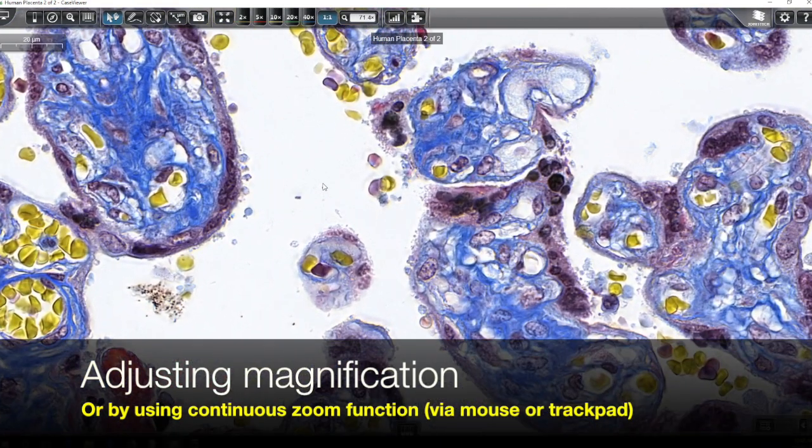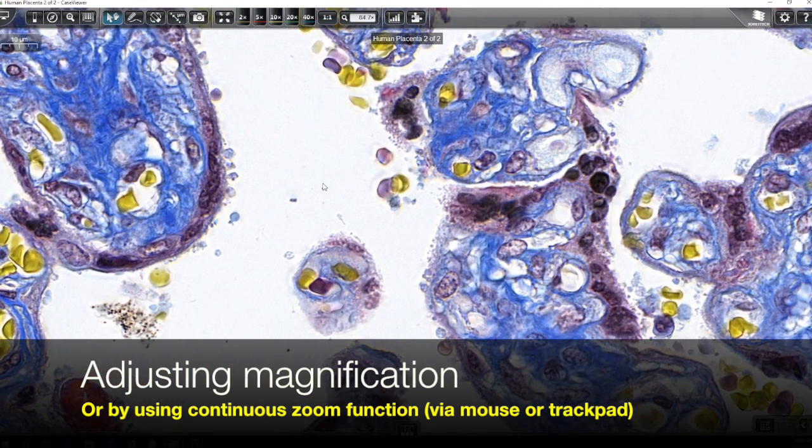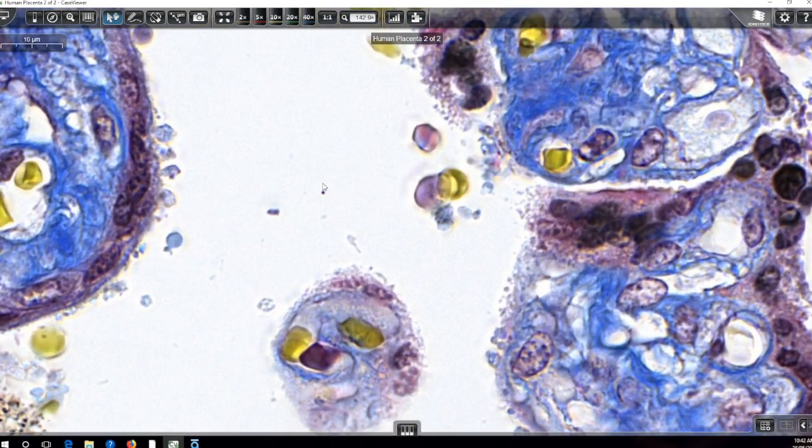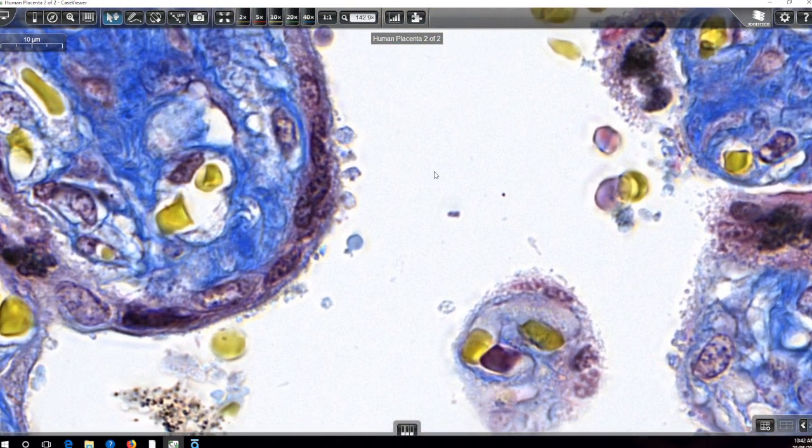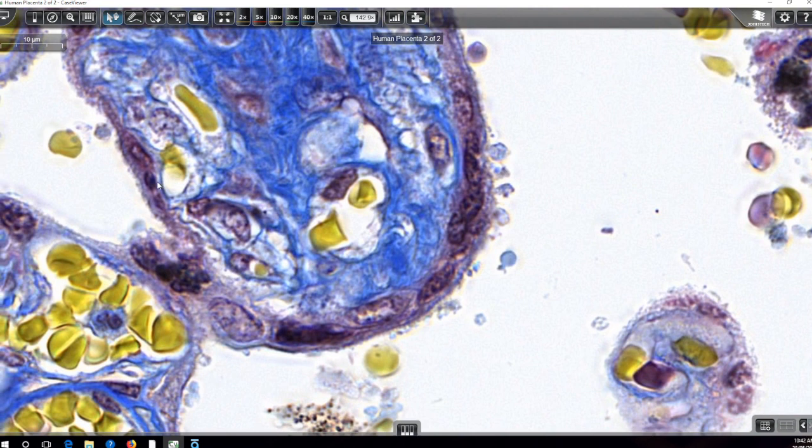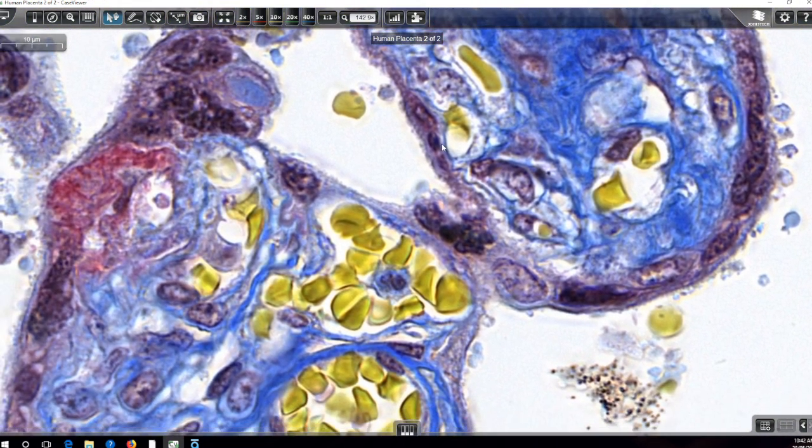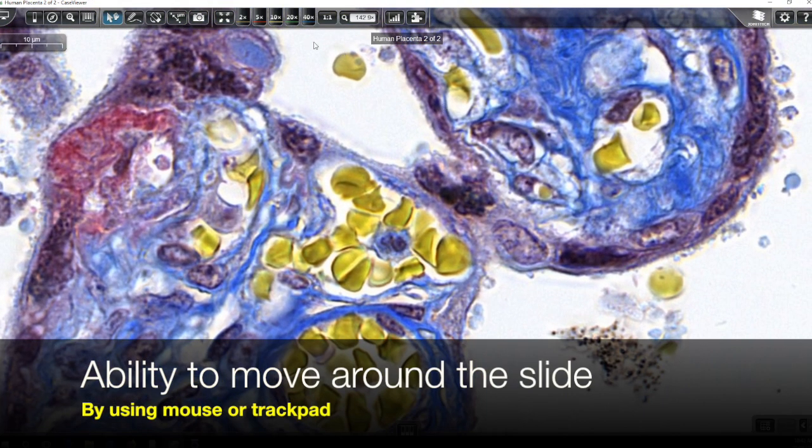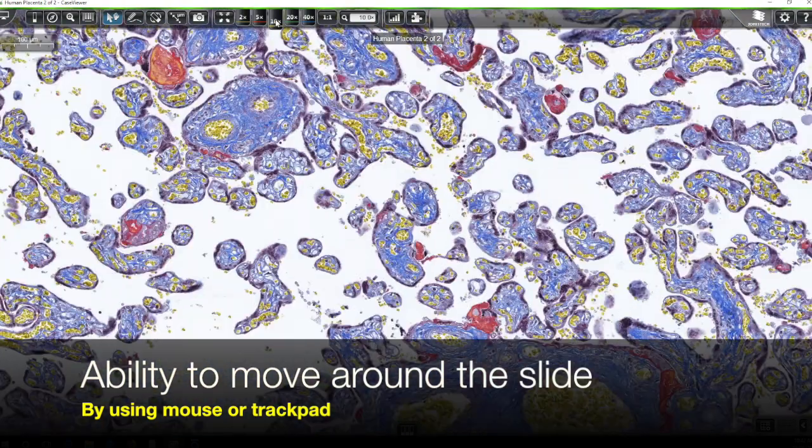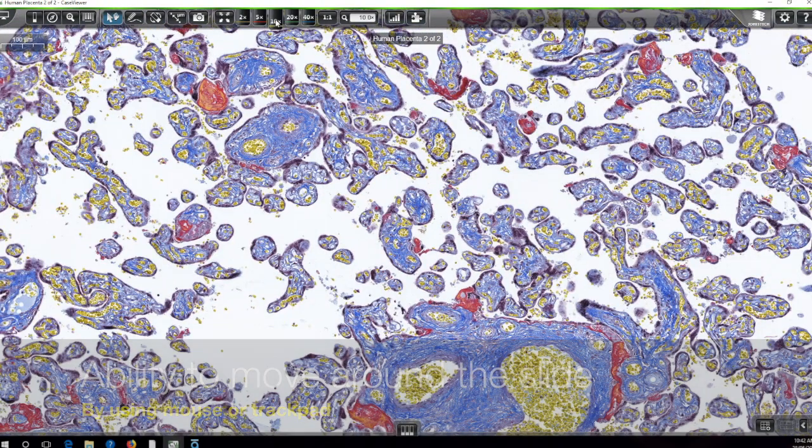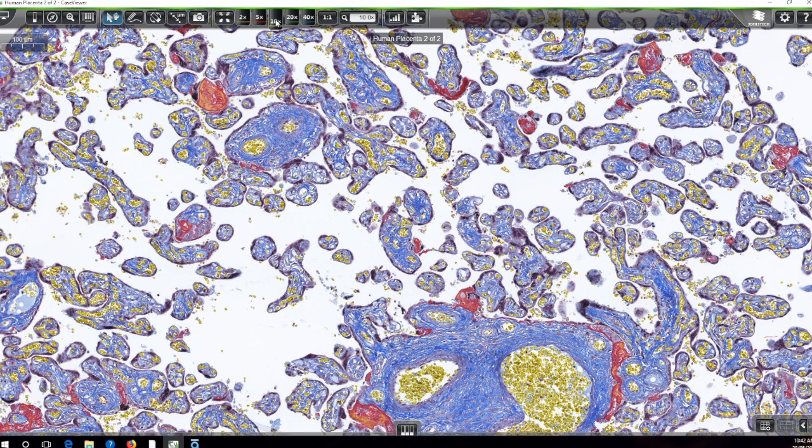The other way to adjust the magnification is just by simply using the mouse to zoom in or out. And there's even a bit of extended magnification beyond what has been achieved using the scanning. We can scroll around using the mouse as well, so it's a really convenient tool for moving around this whole slide.